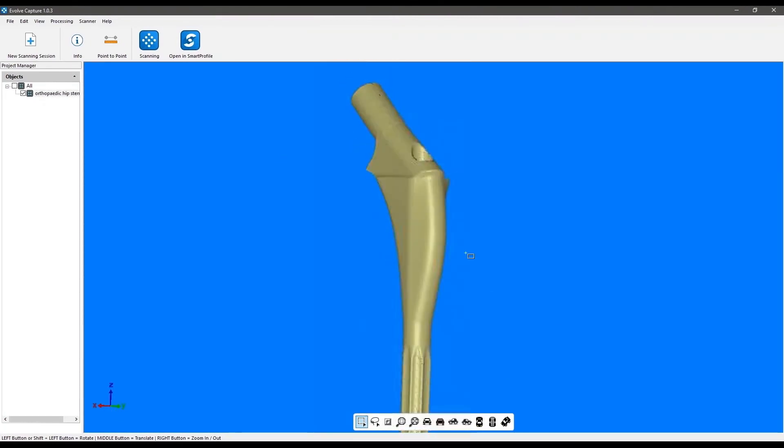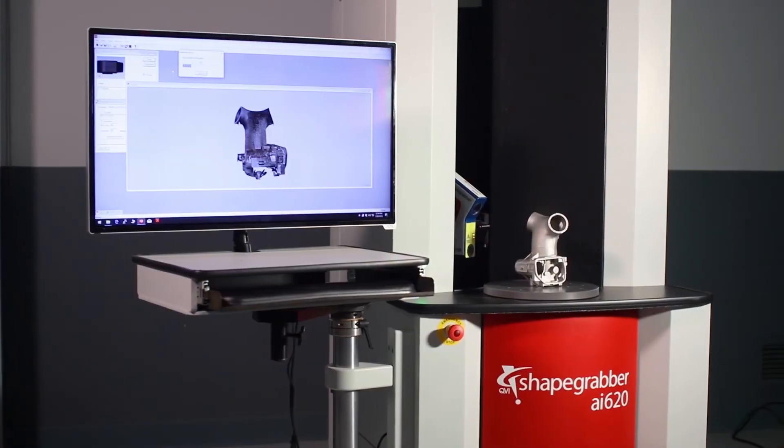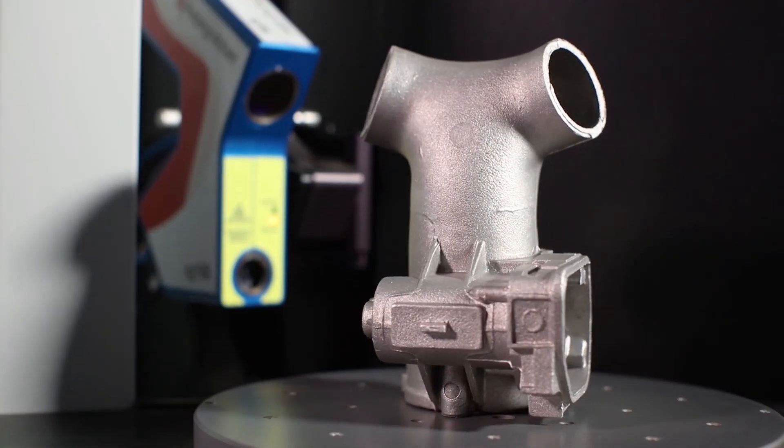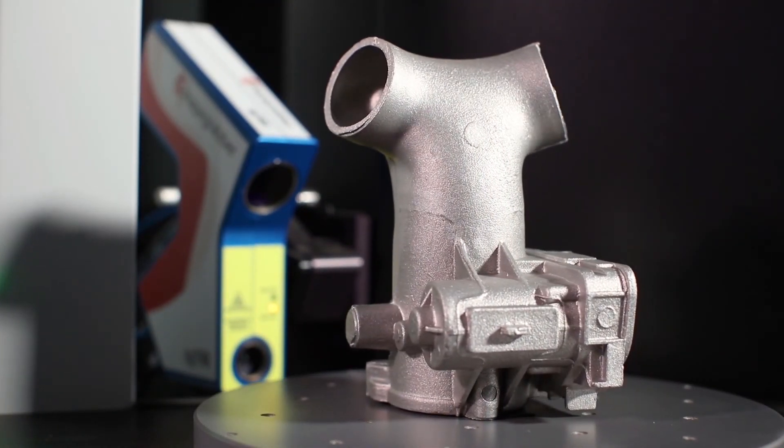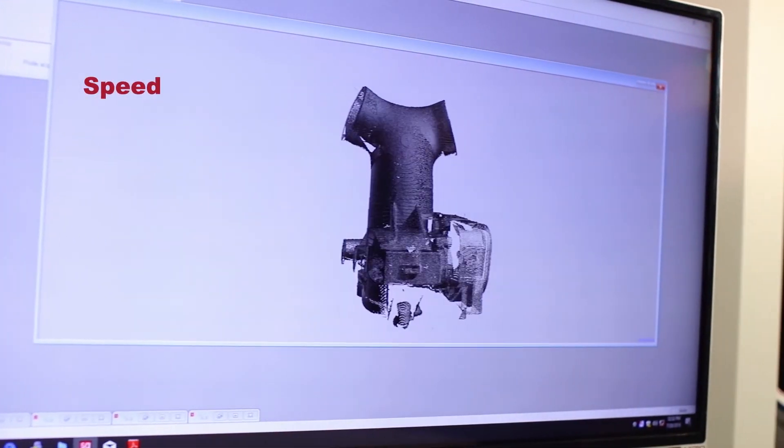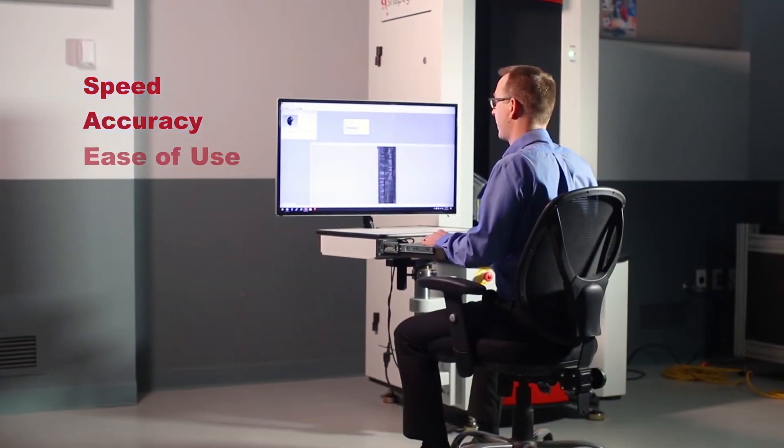The AI620 goes beyond typical 3D scanners, which are intended for modeling or reverse engineering. The AI620 is designed for metrology, engineered for speed, accuracy and ease of use.